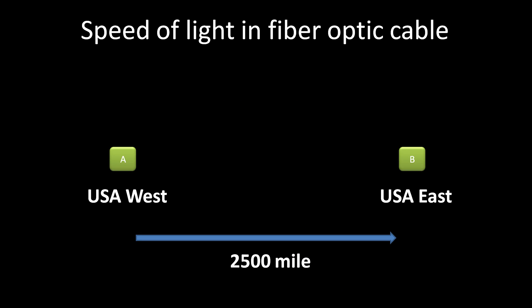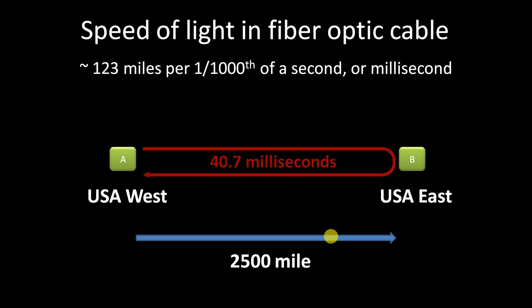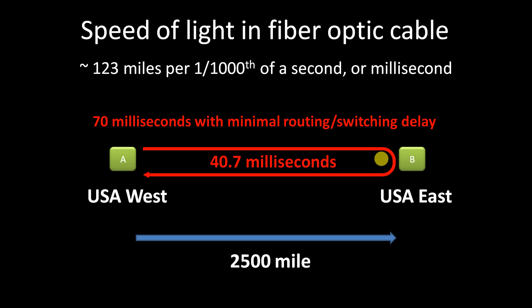So how does this translate to real-world communication networks? It turns out that our data carrier, instead of being a bicyclist, is light. Light has a speed limit of 123 miles for every millisecond. For communications between the east coast and west coast, it's at least 2,500 miles one way and 5,000 miles round trip. At the very minimum, the speed-of-light latency will be 40.7 milliseconds. But with minimal routing and switching delay — because data has to make many hops along the way — the real-world latency is 70 milliseconds.